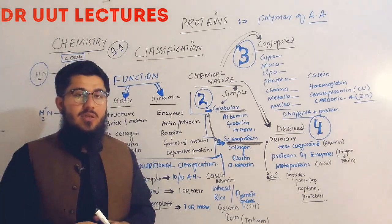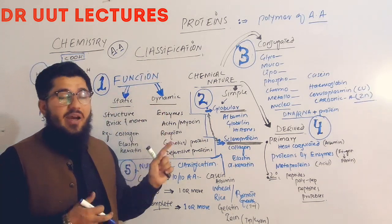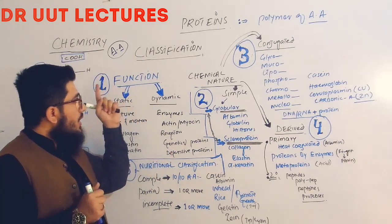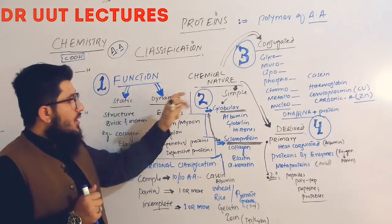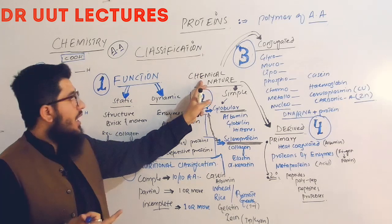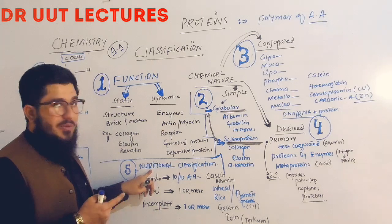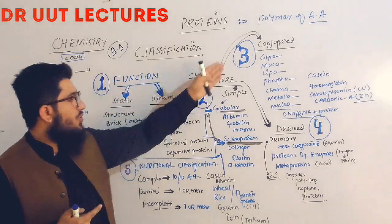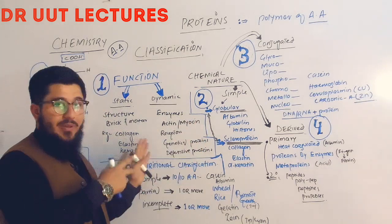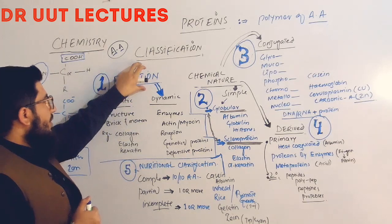Now let's move toward the classification. Proteins are classified into three major groups: number one, on the basis of function; number two, on the basis of chemical nature or solubility; and number three, on the basis of nutritional values. Let's start from the function-based classification.